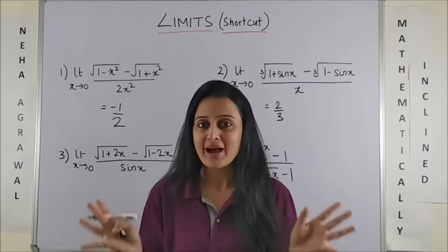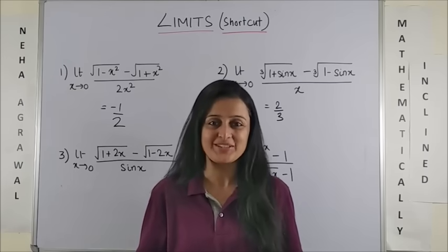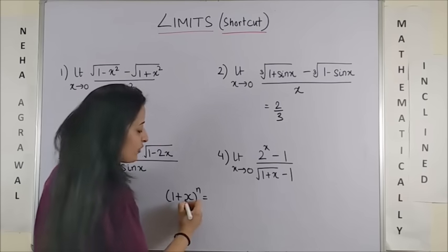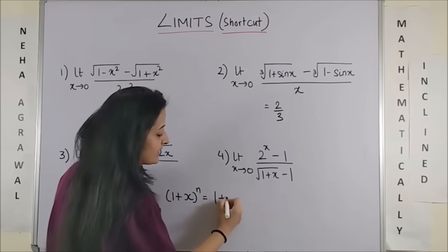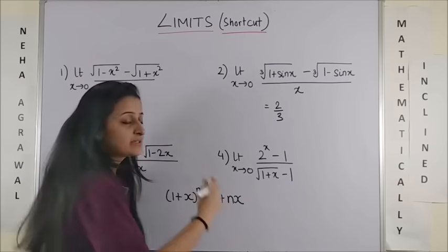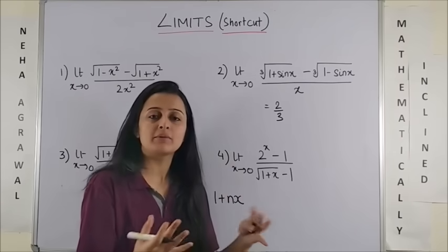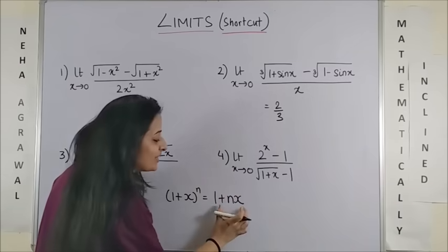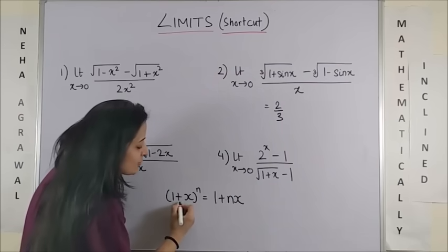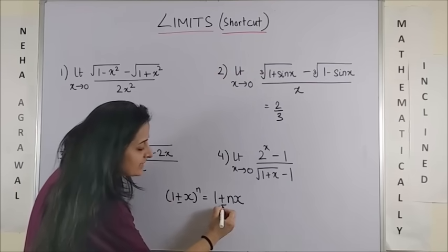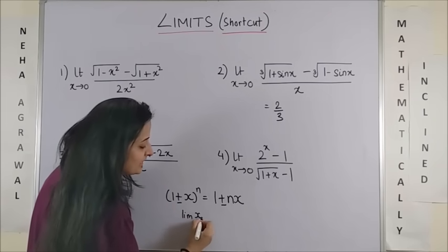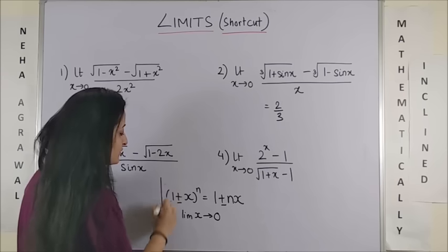why not discuss the magical formula and then we do it together? We all know the binomial expansion for 1 plus x whole raised to power n is 1 plus nx plus n into n minus 1 by 2 x square plus so on and so forth. We are only interested in this. And added to this,